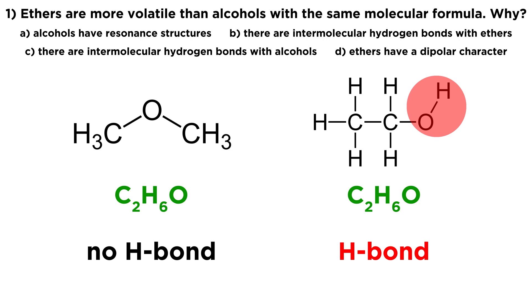Because there is much stronger hydrogen bonding going on in solution, it will require much more heat energy to pull those molecules apart since they're interacting so strongly — it will take more heat energy to liberate those molecules into the gas phase. So for this reason the answer is option C: there are intermolecular hydrogen bonds with alcohols, and not with the ethers.